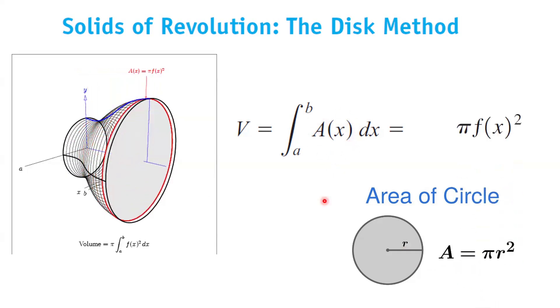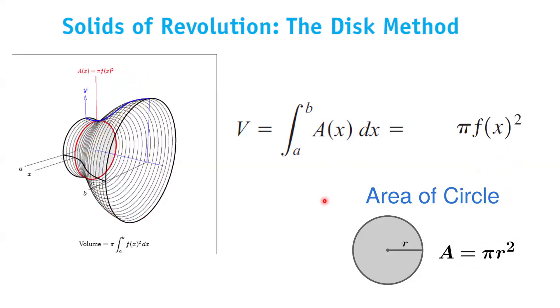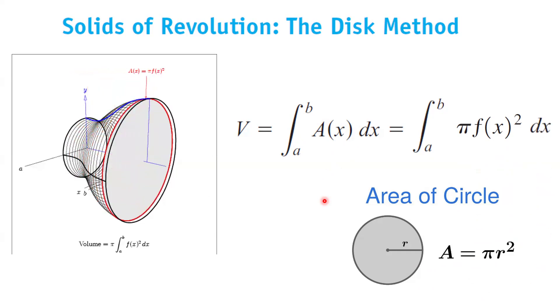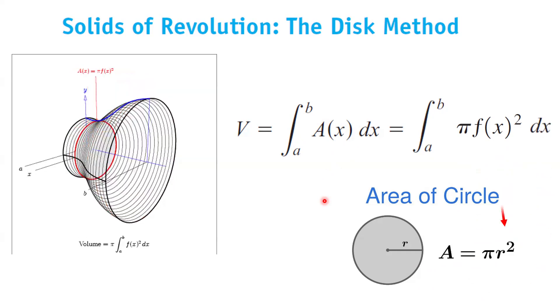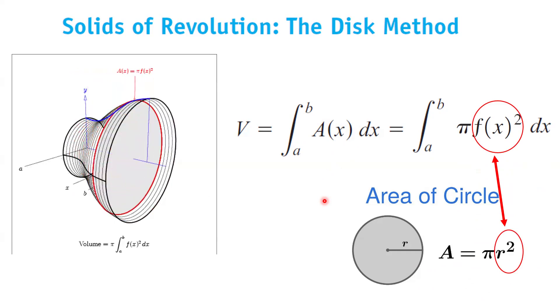It is equal to π f(x) raised to the second power, and then the definite integral from a to b with respect to x. Please pay attention: r is f(x) here, so you're basically taking the function and raising it to the second power.